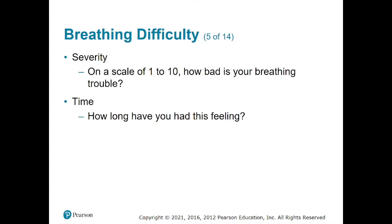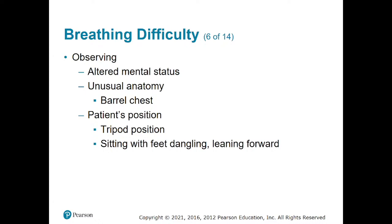The next aspect of assessing difficulty breathing is through observation. We're going to observe things like altered mental status — that's a pretty early sign their breathing is inadequate. Another thing to look at is unusual anatomy, such as barrel chestedness — their chest is getting as big as possible with every breath, working to get every breath in. We'll talk more about barrel chestedness in COPD patients. The next bullet point is their position — tripod position: hands on knees, head over chest.